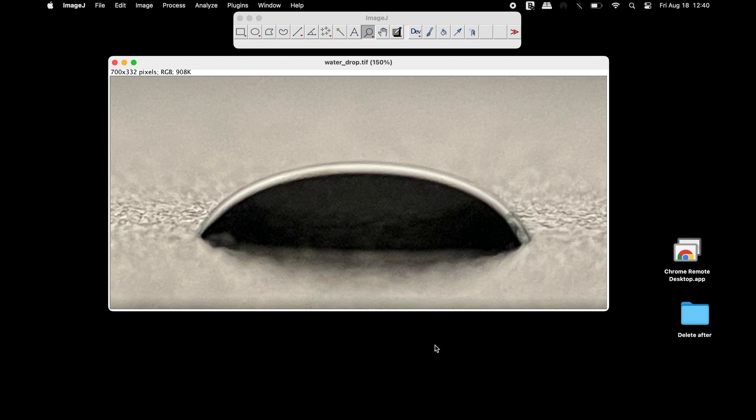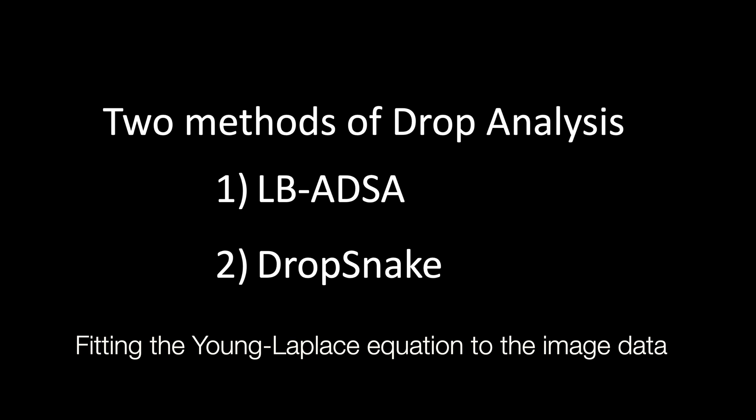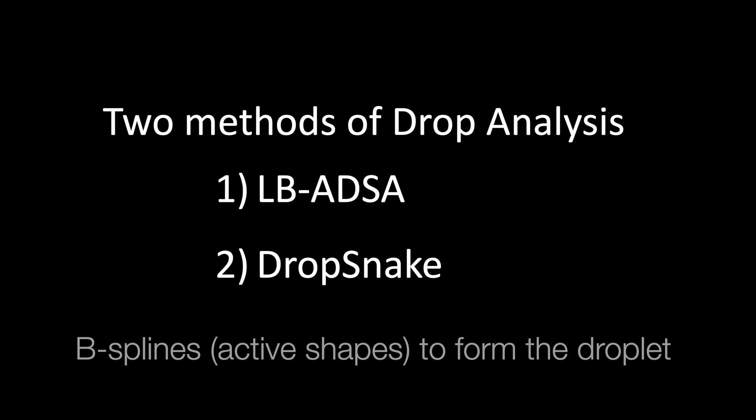Here is an image of a water drop, and we will use ImageJ to measure the contact angle. Two methods of drop analysis will be used for the calculation: the LBADSA method, which is based on fitting the Young-Laplace equation to the image data, and the Drop Snake method, which relies on B-splines — that is, active shapes — to form the droplet.